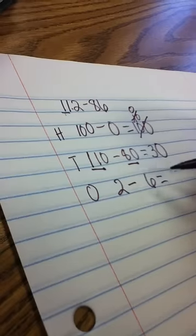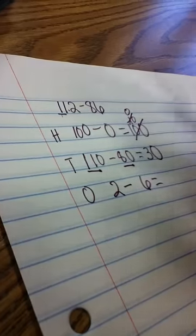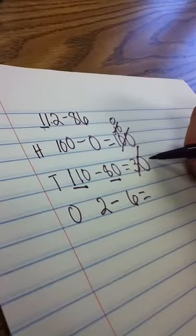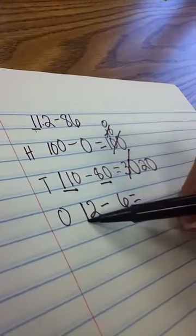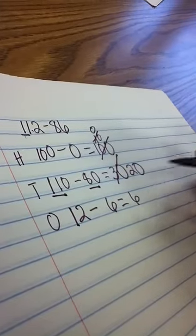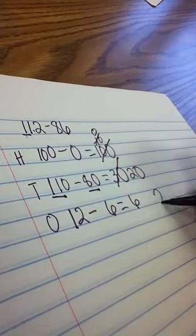They have 2 minus 6. And they know that because of those red flags, I'm not supposed to do that. So they know they're going to take a 10 from here. That leaves 20 left, and they're going to send it here. 12 minus 6 equals 6. And so their answer is 26.